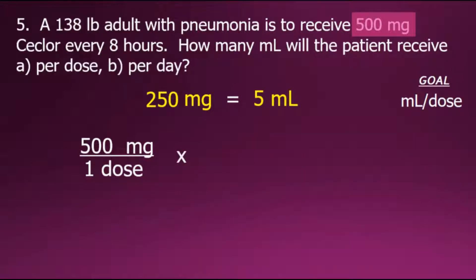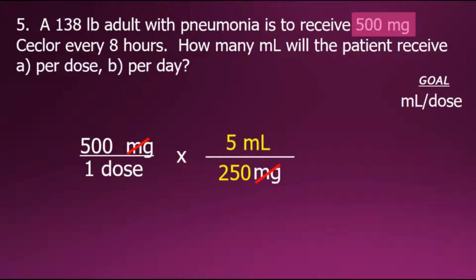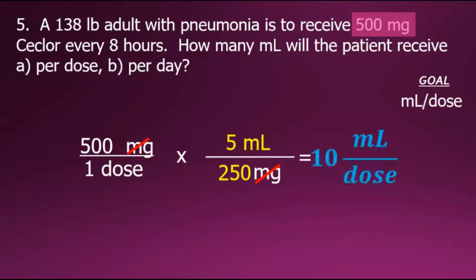Our conversion fraction will need the milligram value in the denominator with the equivalent milliliter value in the numerator, giving a conversion fraction with a value of one. Canceling out the common factor of milligrams, we perform the multiplication since we now have milliliters per dose as our goal, and the indicated division gives a final answer of 10 milliliters per dose.